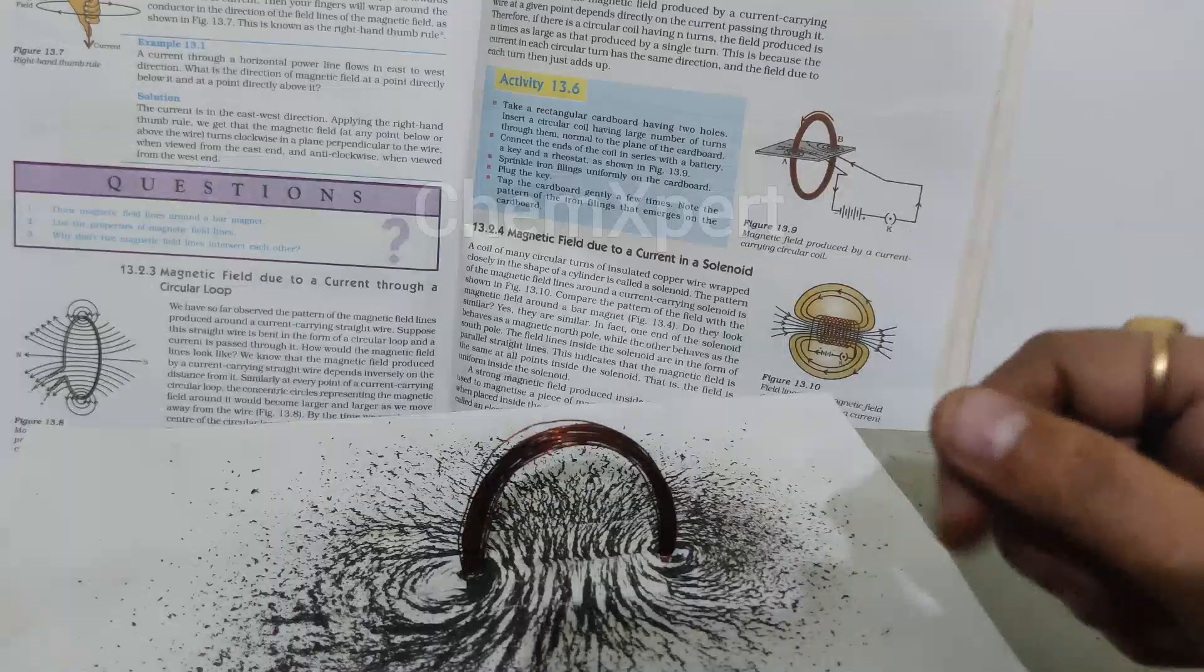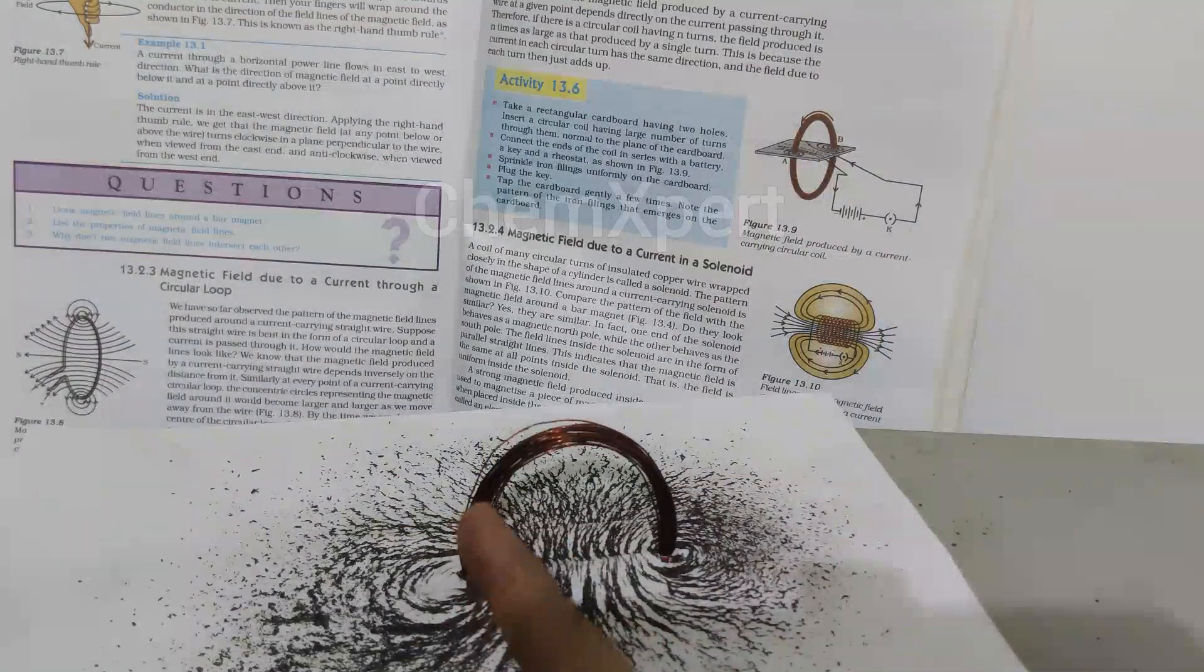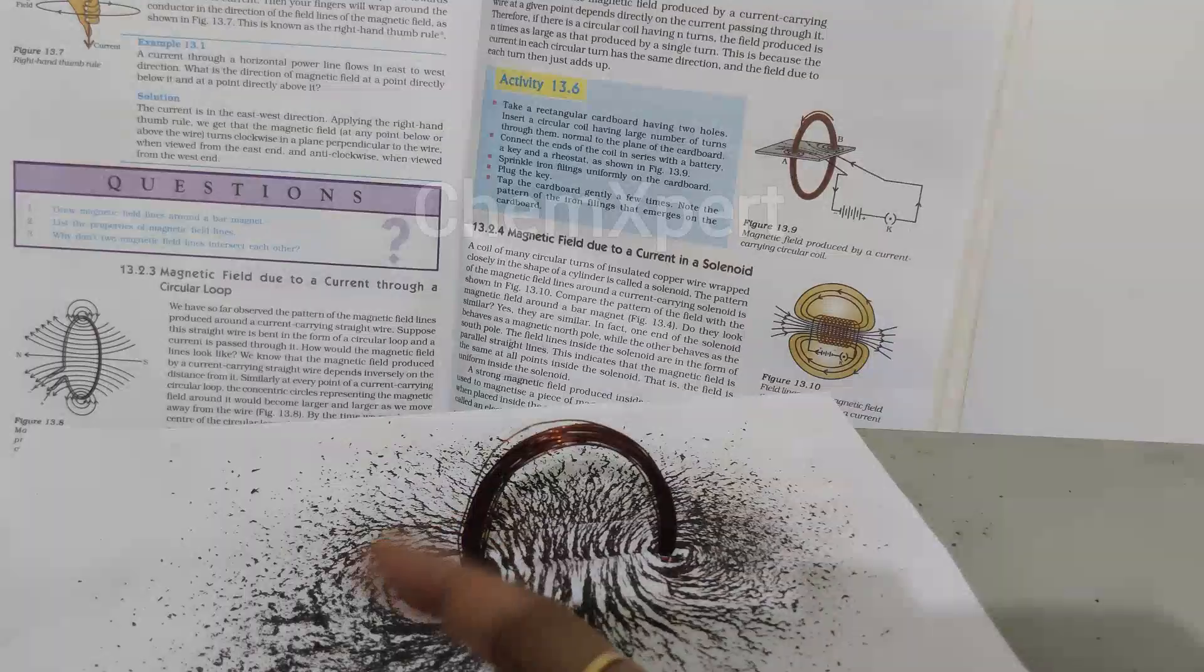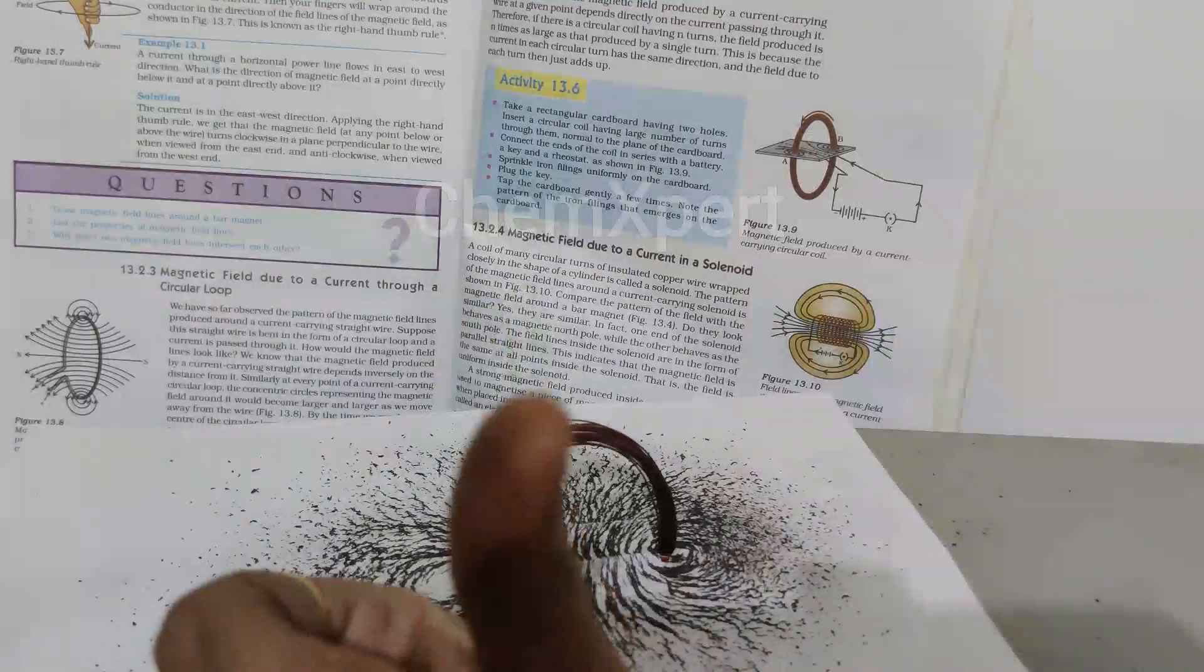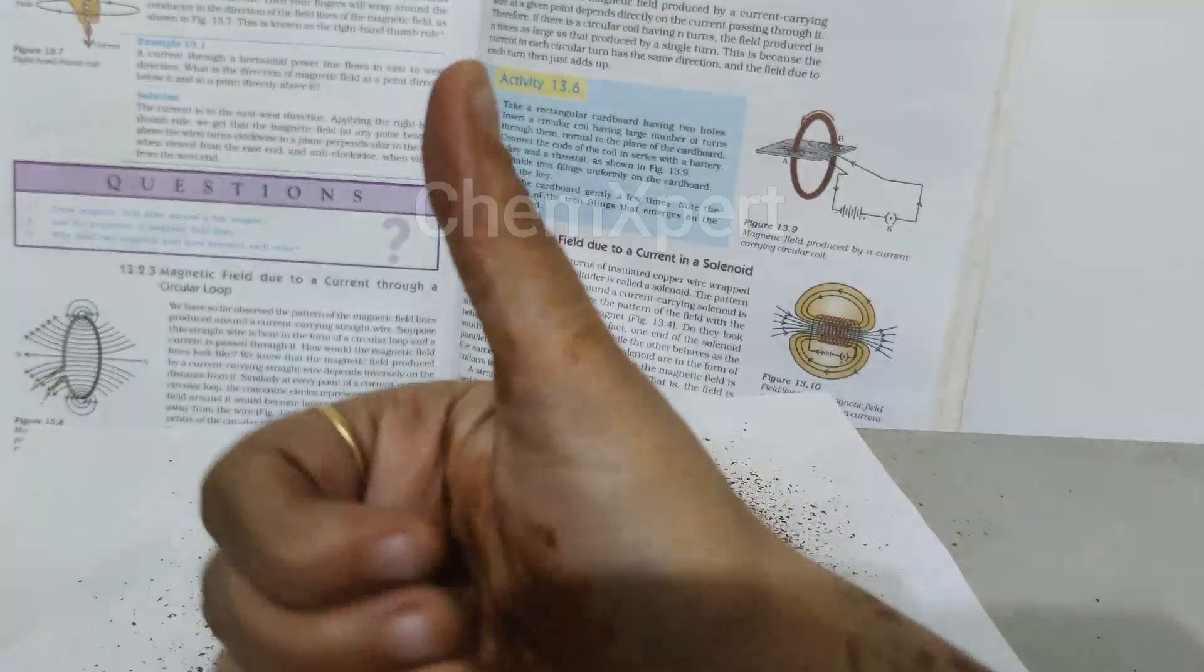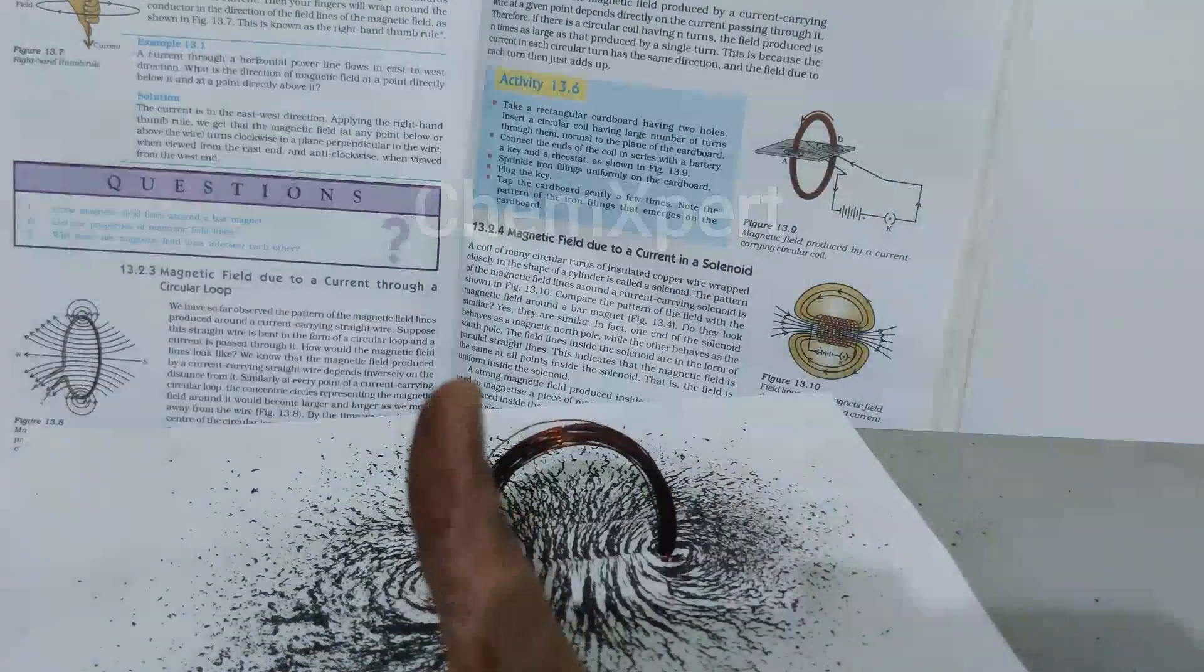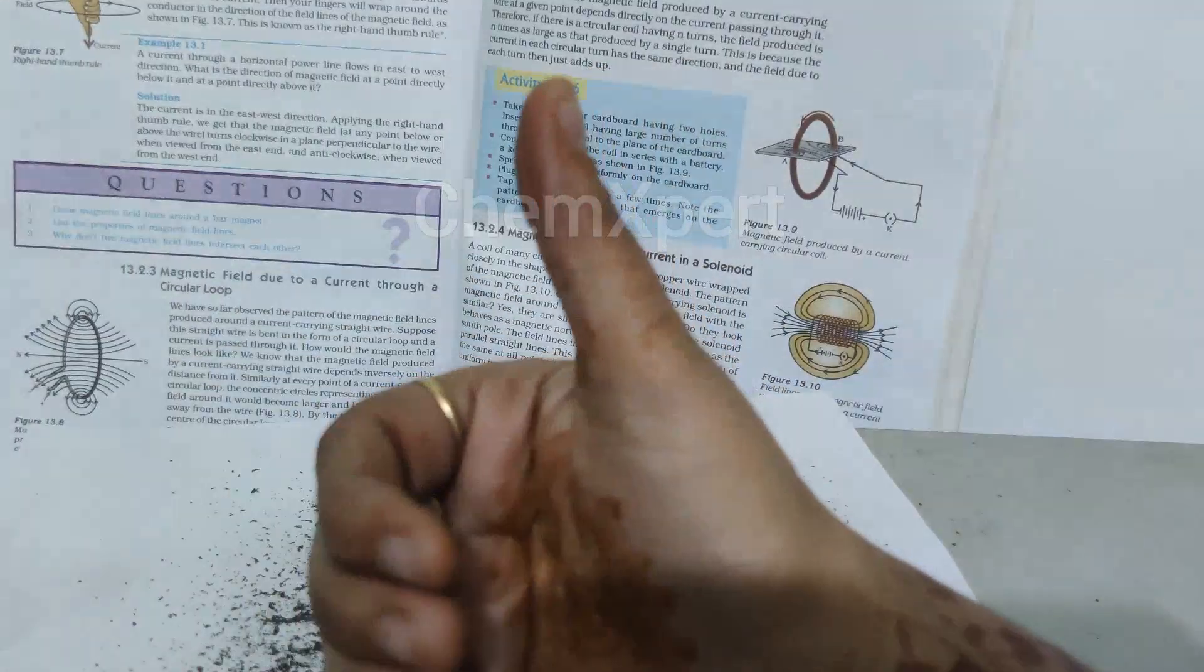It is found by using the right hand thumb rule. For example, we consider this point as a straight line and hold this in our right hand. If current is in the upward direction, then the curled fingers will give us the direction of the magnetic field.